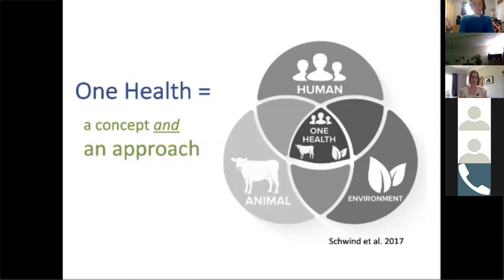As an approach, it is a collaborative effort of many disciplines, working locally, nationally, and globally, to attain optimum health of humans, animals, and the environment — health along a broad spectrum. Foundational tools for One Health include systems thinking and transdisciplinarity. These are not tools unique to One Health, but they're very important in its application. Transdisciplinarity brings together lots of different perspectives, expertise, and roles to generate new knowledge and understanding.